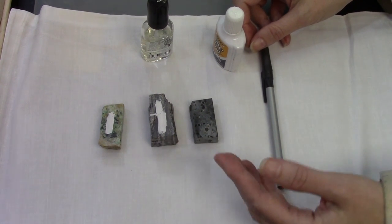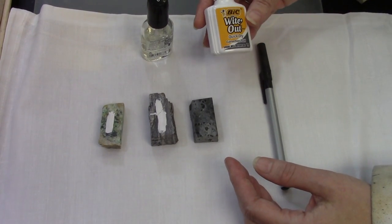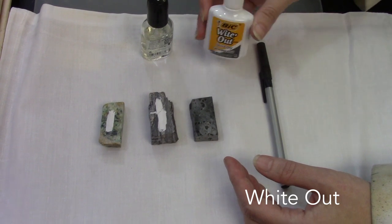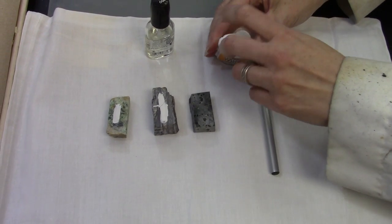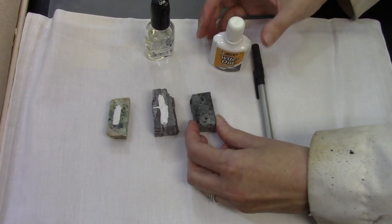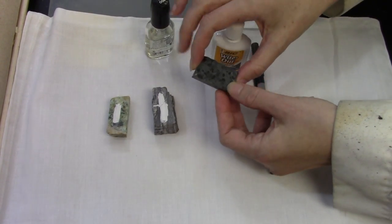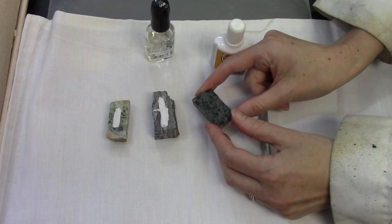One of the easiest ways is to use liquid correction fluid and make a stripe of this on the side of the thin section that's opposite the side that you want to make the thin section of.